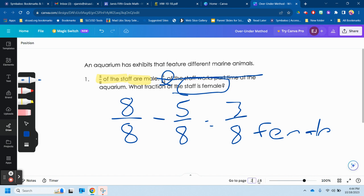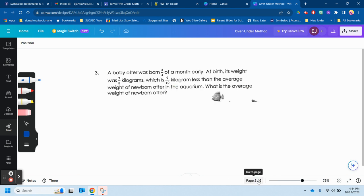So the next one's kind of tricky as well. A baby otter is born three-fourths of a month early. Let's see what they're asking us before I even think about that three-fourths. At birth, its weight is seven-eighths of a kilogram, which is nine-tenths of a kilogram less than the average weight of a newborn otter in the aquarium. What's the average weight?